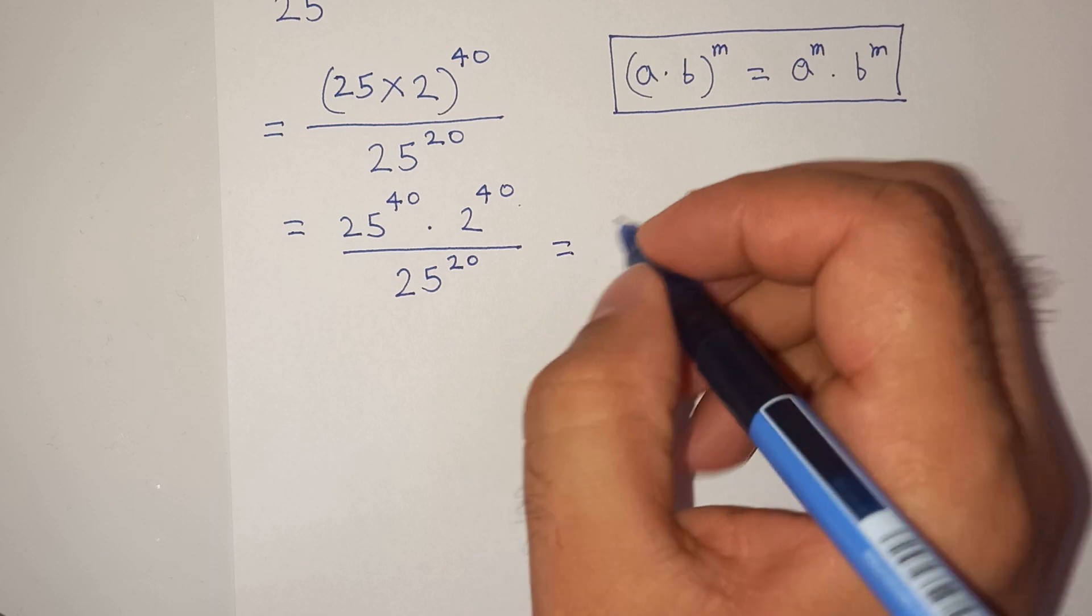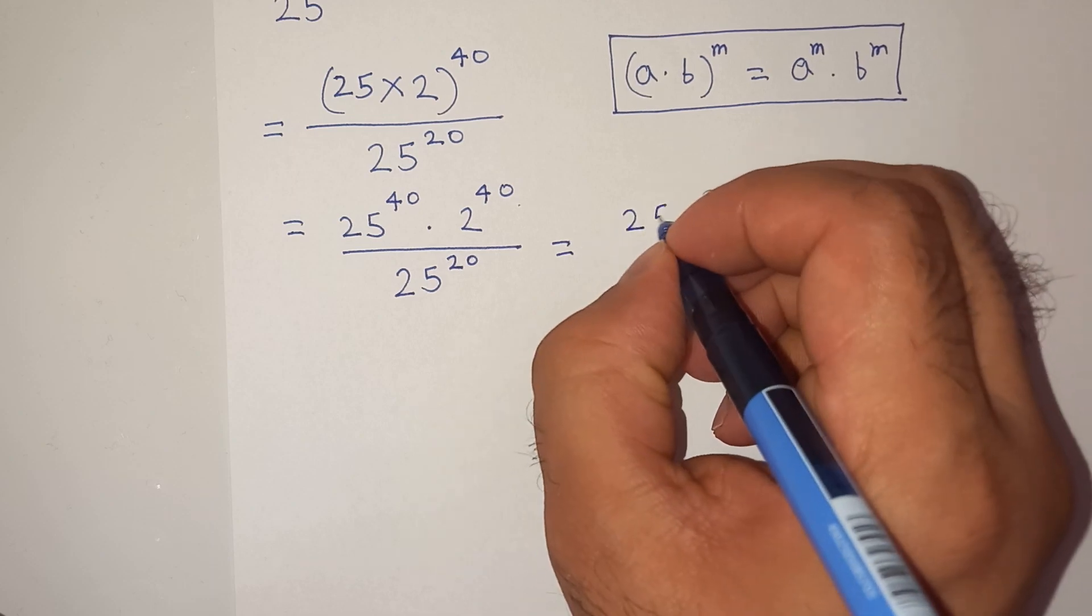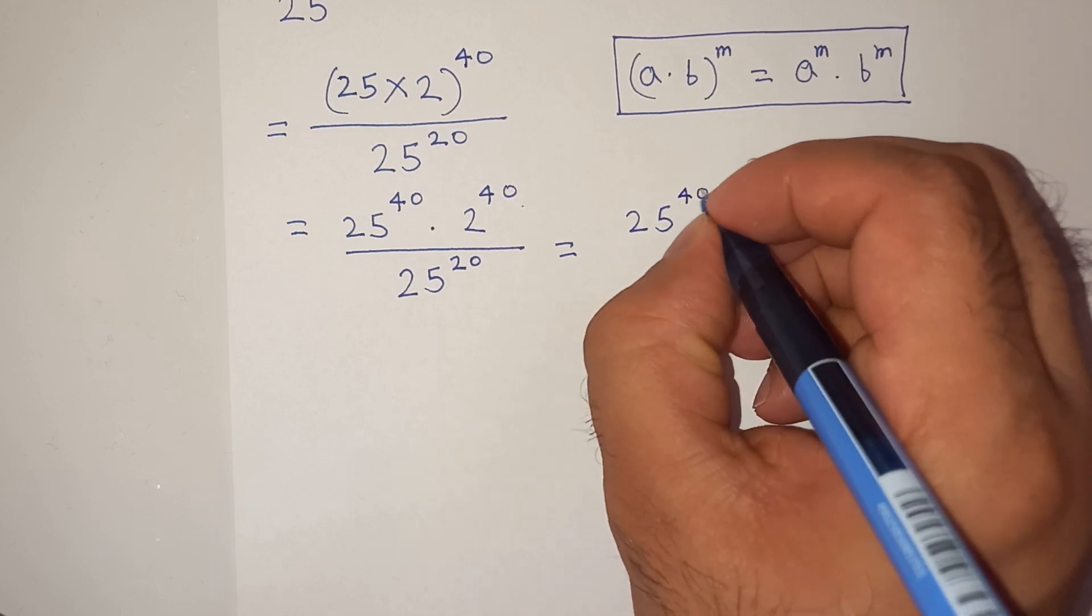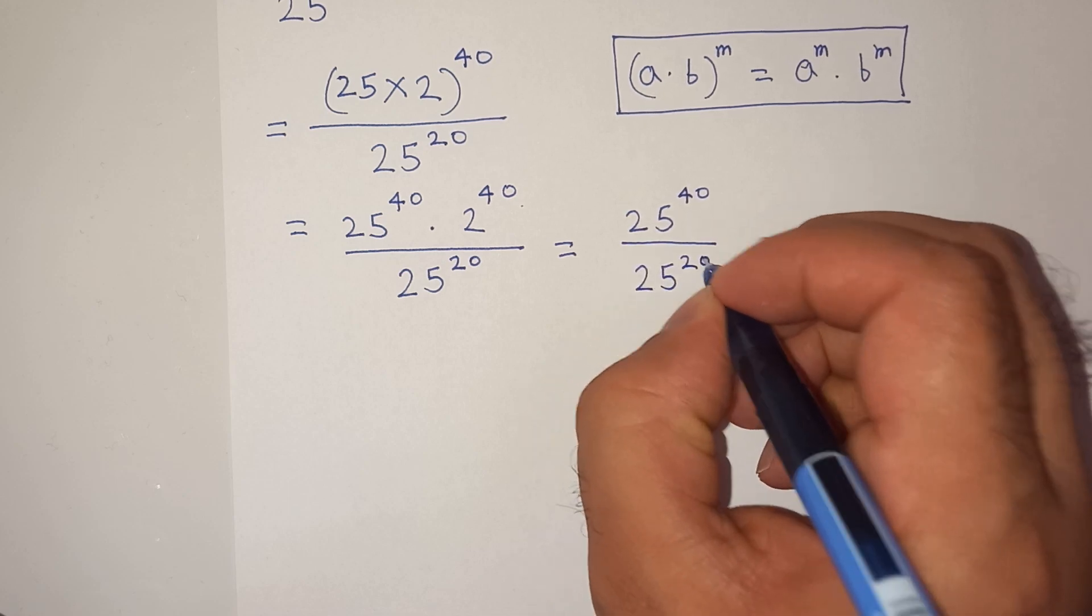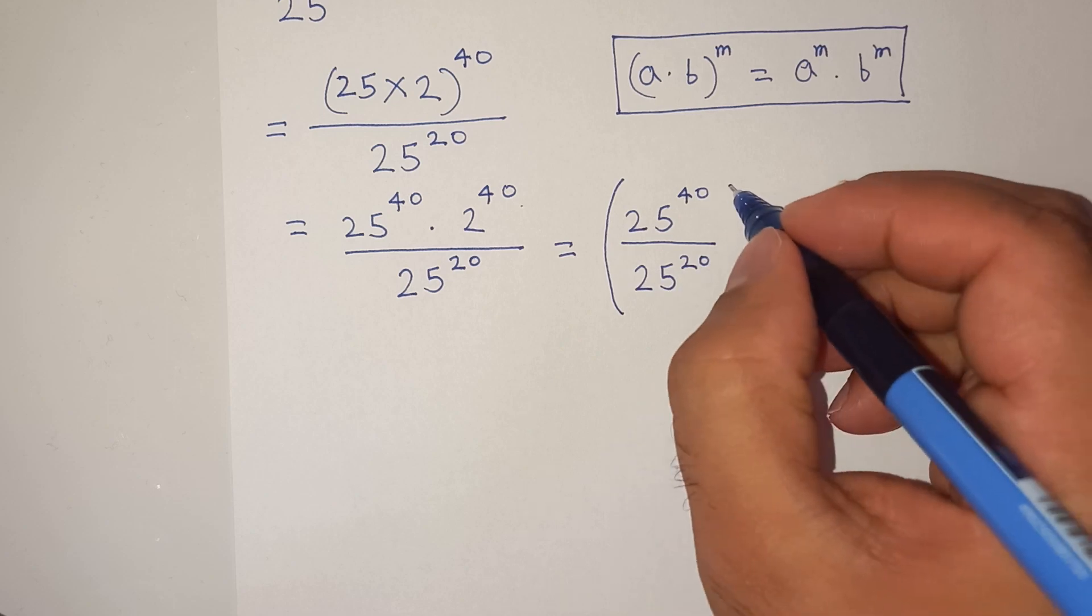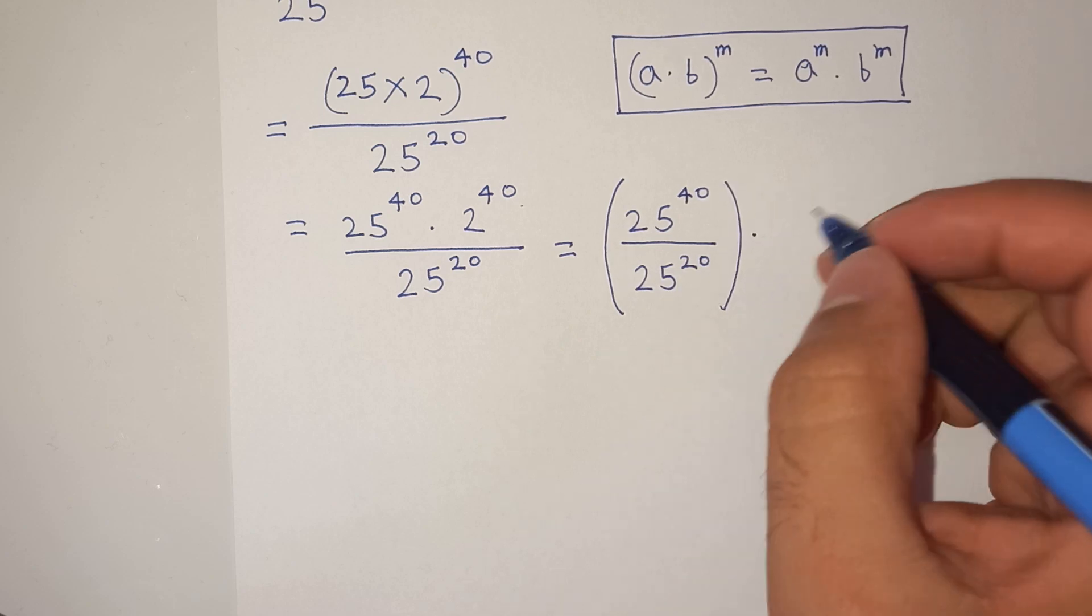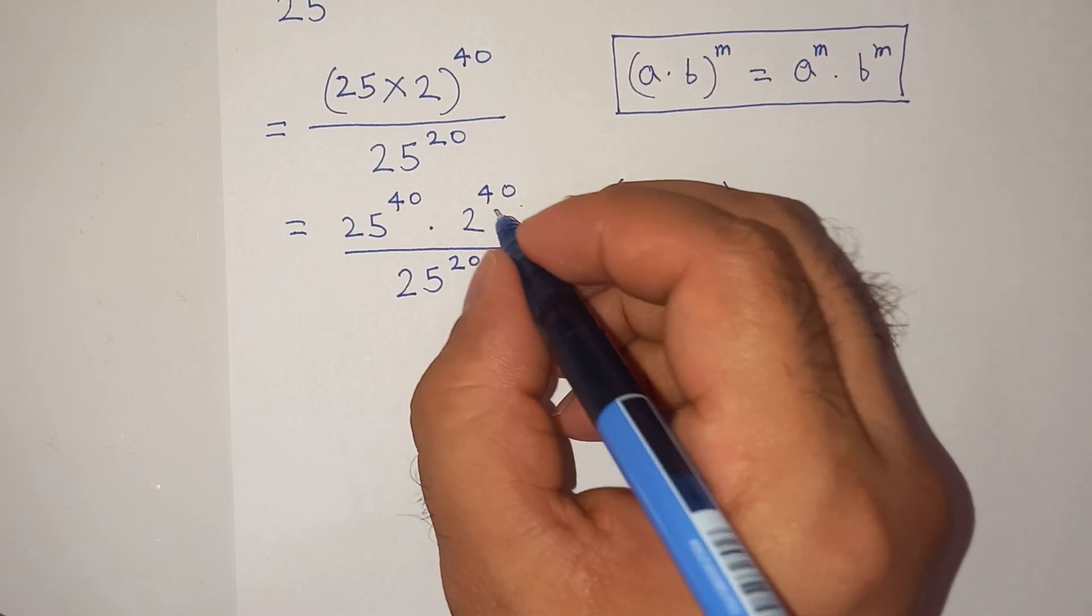Now I can rewrite this as 25 power 40 divided by 25 power 20. I'll take this in bracket multiplied by 2 power 40.